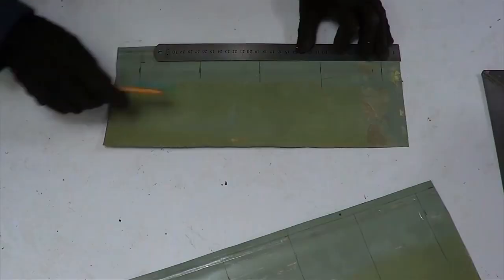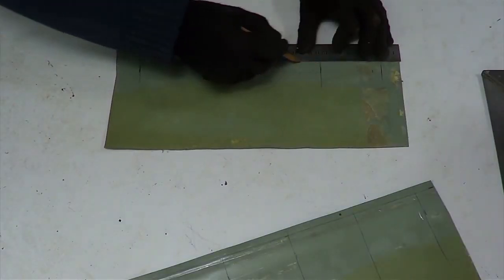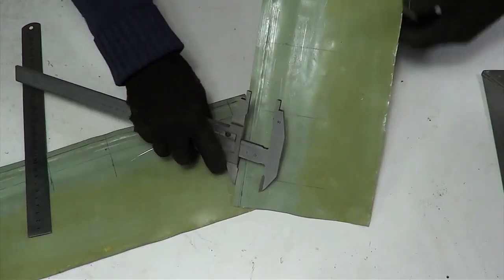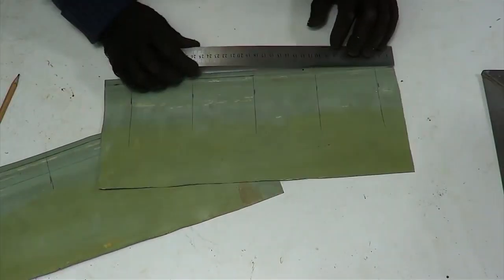We draw a line of 2 cm wide from the edge of the workpiece using a caliper. This is the distance to our last marks. We do the same with the second blank.